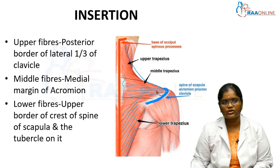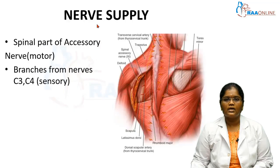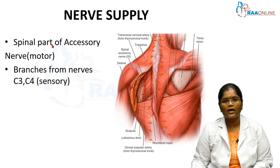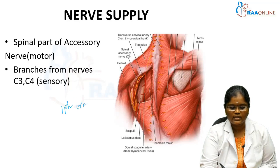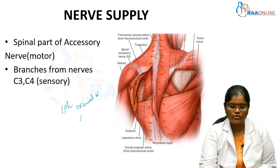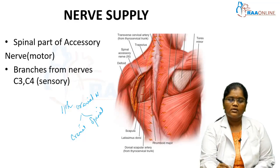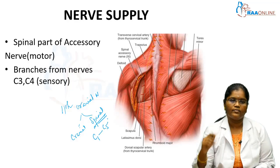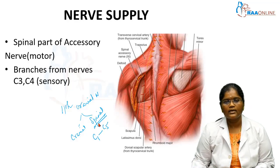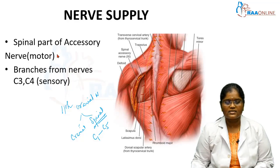The trapezius muscle is supplied by the spinal part of the accessory nerve, which is the 11th cranial nerve. The 11th cranial nerve is divided into two parts: the cranial part and the spinal part. The spinal part arises from C1 to C5 spinal segments, which unite to form the spinal accessory nerve. This spinal accessory nerve provides motor innervation to the trapezius muscle.